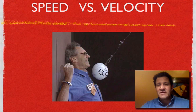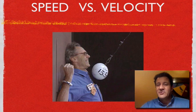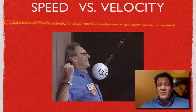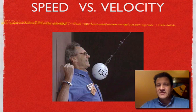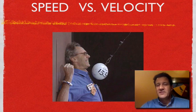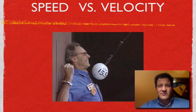Displacement has a very specific definition: it's our change in position. All we really care about is our initial position and our final position, and which direction we went. Displacement, because it has a direction to it, is a vector. We don't care what happened in between — we just have to know the final and the initial, and from that we can determine the direction.